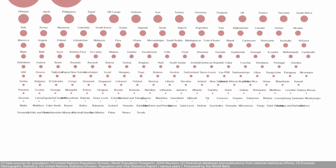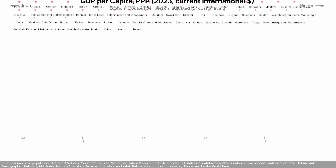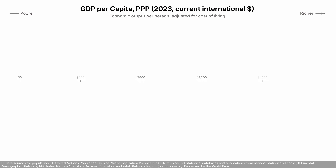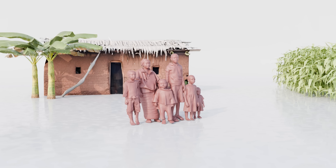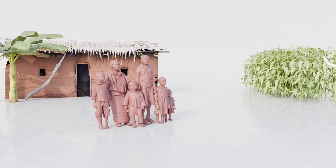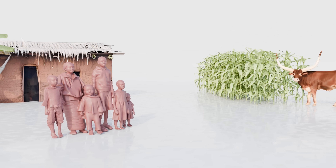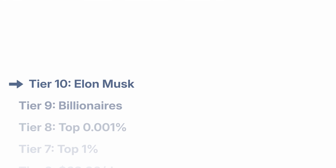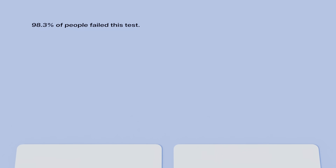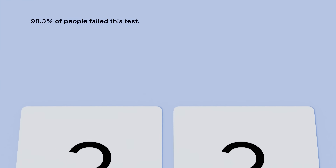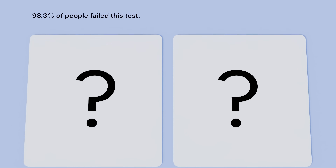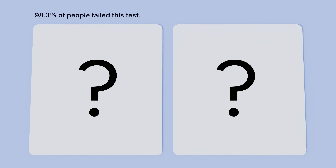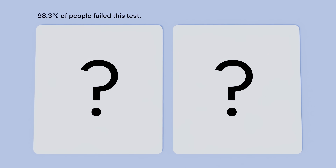I'm going to rank them from poorest to richest and show you how people live around the world. We'll start with farmers living with less than $2 per day and climb all the way to Elon Musk. And I'm going to make a bet — you probably can't answer these two simple questions about the world. Fewer than 2% of my viewers got them right.